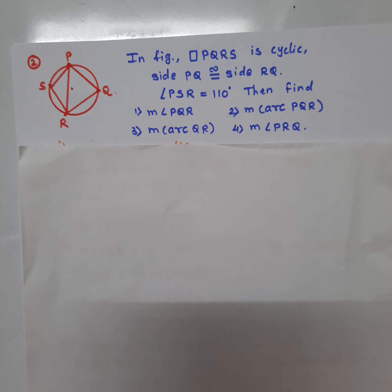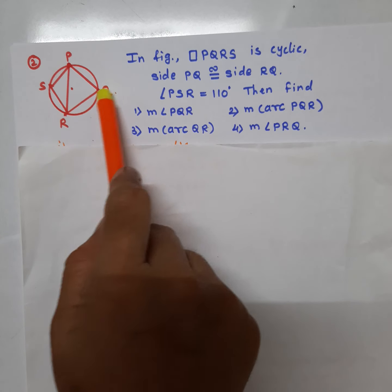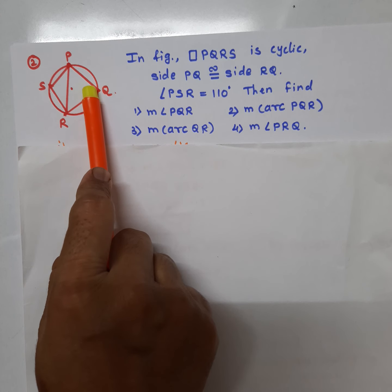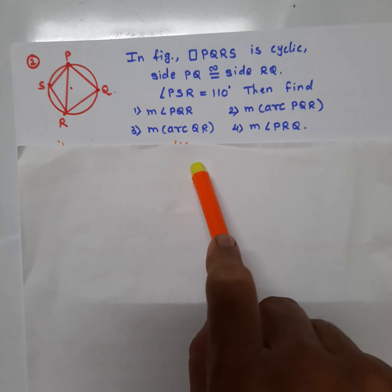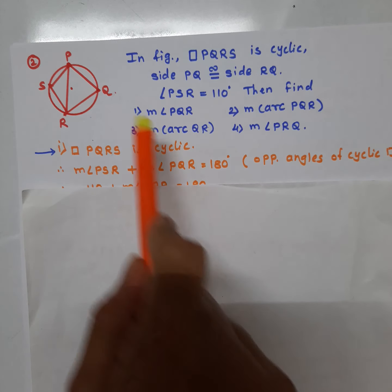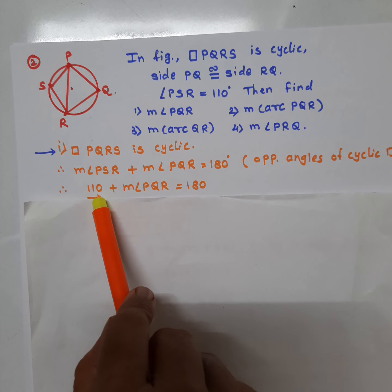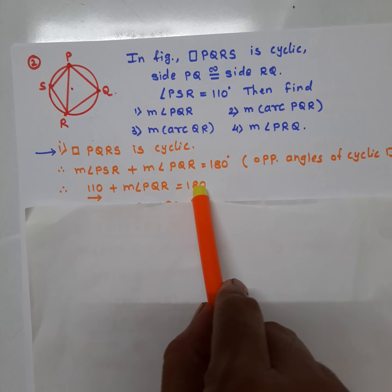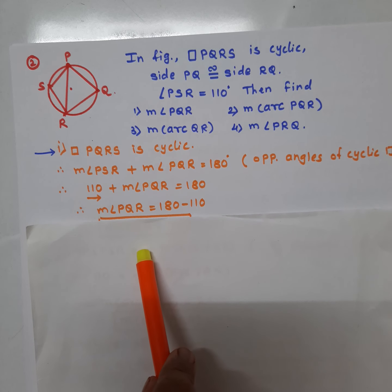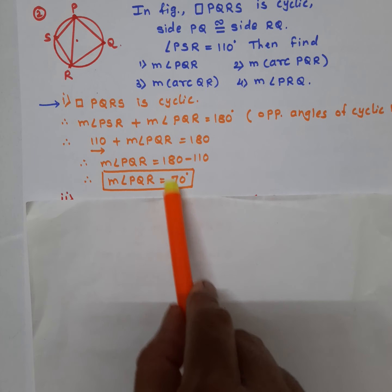The measure of opposite angles of a cyclic quadrilateral is equal to 180 degrees because they are supplementary. Angle PSR is given and the question asks to find angle PQR. Quadrilateral PQRS is cyclic, therefore angle PSR plus angle PQR equals 180 degrees. Substituting: 110 plus angle PQR equals 180. Transferring 110 to the right side, angle PQR equals 180 minus 110, therefore angle PQR equals 70 degrees.